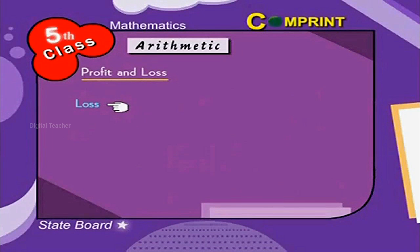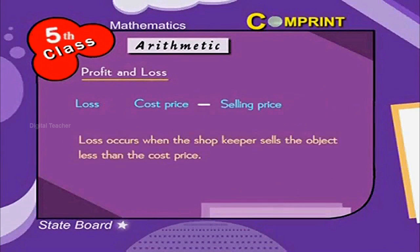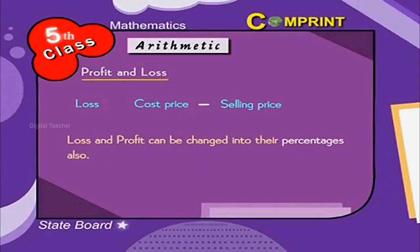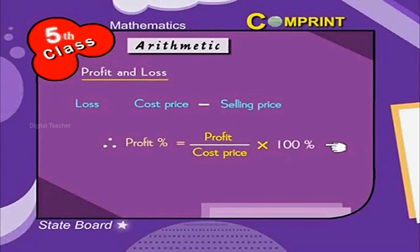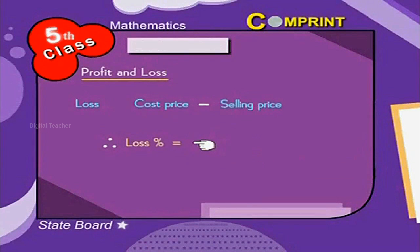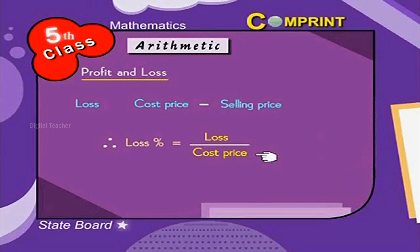Loss: Cost price minus selling price. Loss occurs when the shopkeeper sells the object less than the cost price. Loss and profit can be changed into their percentages also. Therefore, profit percentage is equal to profit by cost price into 100. Loss percentage is equal to loss by cost price into 100.